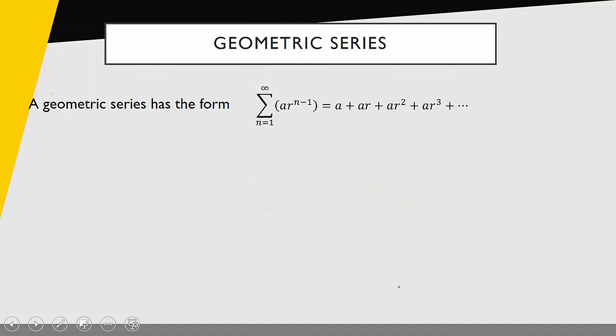So what is a geometric series? A geometric series has this form. The important thing is not just to recognize it in sigma notation, but to really see what's happening in its expanded form. The big idea is that we start with some value a, and to get to the next term we simply multiply by r, then multiply by r again, so on and so forth. We generate this series by simply multiplying each term by r to get to the next term.